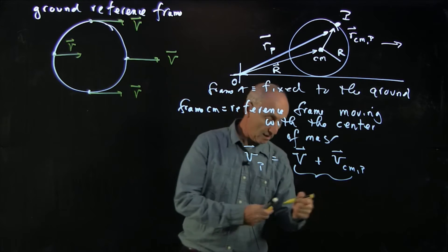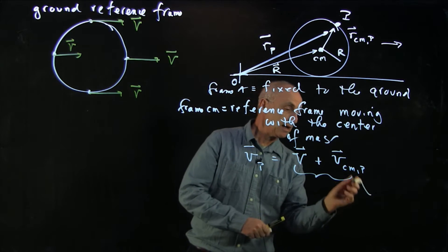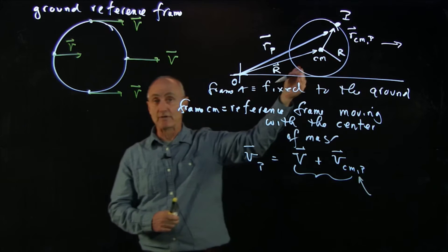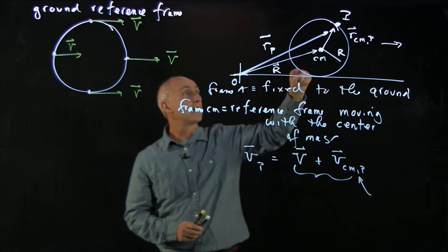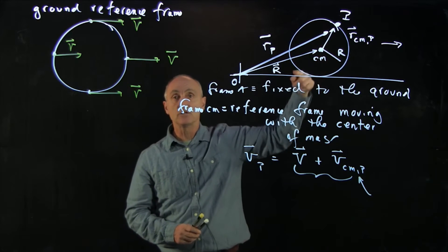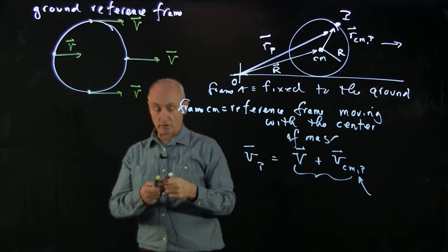Let's add to that the velocity of a point of the rim as seen in the reference frame moving with the center of mass. We just saw that every single point on the wheel is undergoing circular motion in that reference frame.